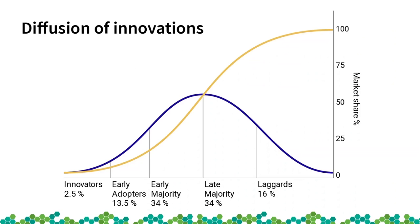Then we have the late majority, who are not that innovative and don't like new tendencies that much, but when most people have joined, they also join. And at the last point we have the laggards — basically the people who joined because everybody was already there.